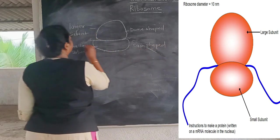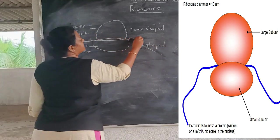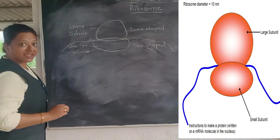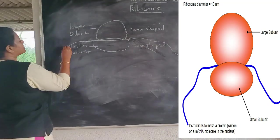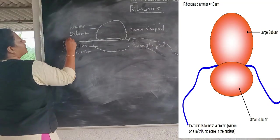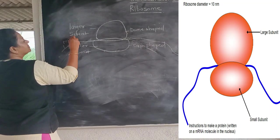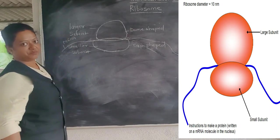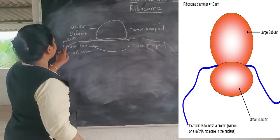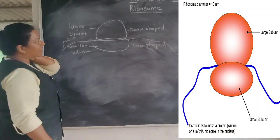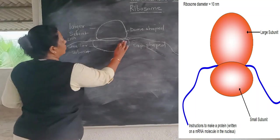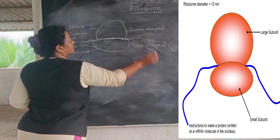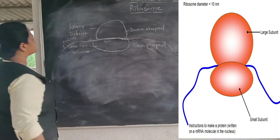Between the two subunits, a thread-like structure is present called mRNA — messenger RNA. This is part of the structure of the ribosome.